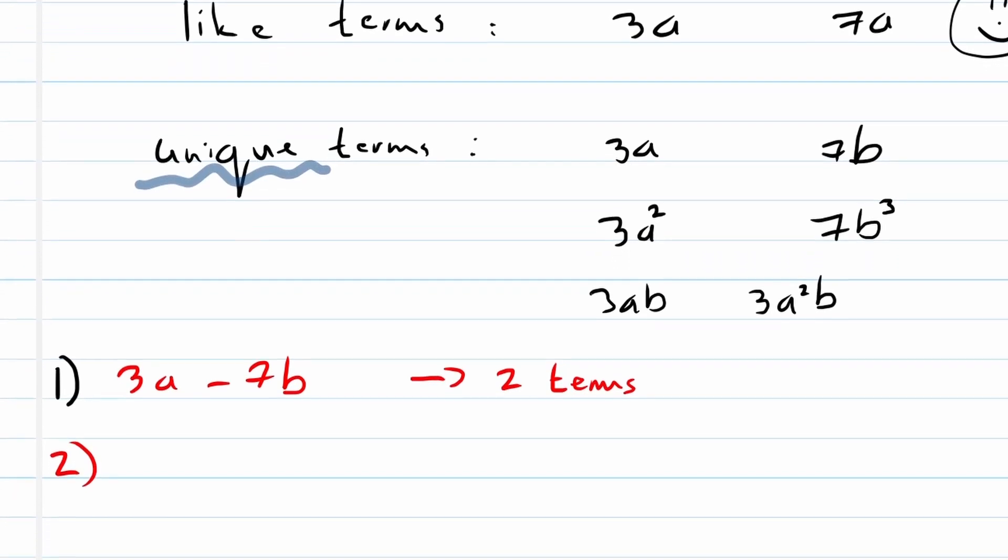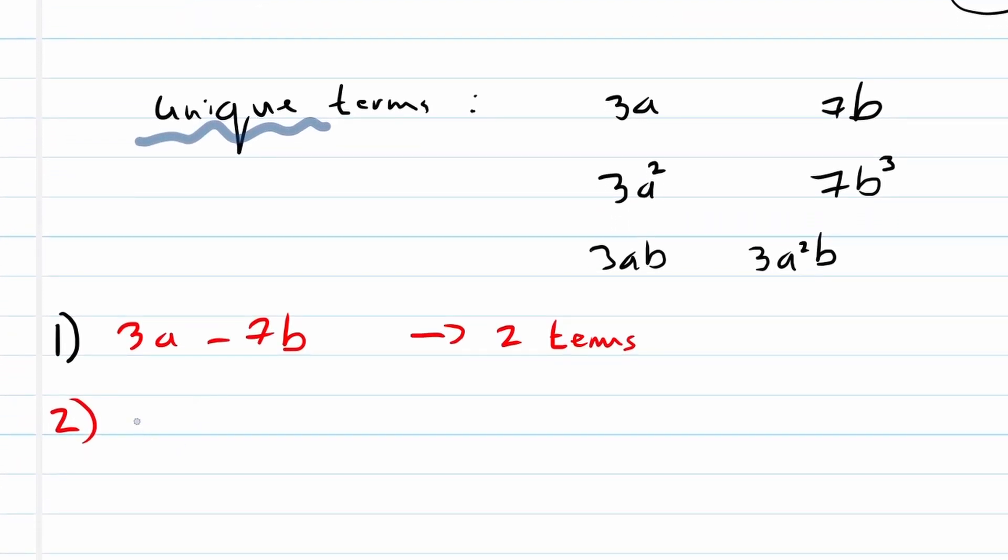Okay, let's look at example 2. 3a minus 7b times 27. Can you see that the 7b times 27 is just one term?